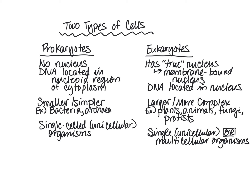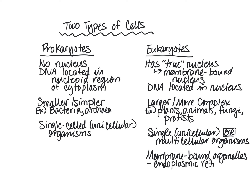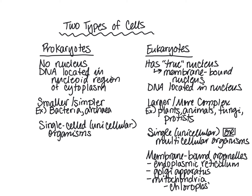Both classes have some specialized structures found in just one or the other. One main difference is that eukaryotic cells have membrane-bound organelles, which include things like the nucleus, but also an endoplasmic reticulum, Golgi apparatus, mitochondria, and chloroplasts. Prokaryotes do not have these membrane-bound organelles.